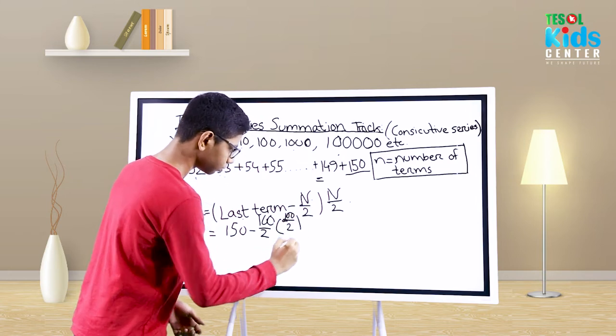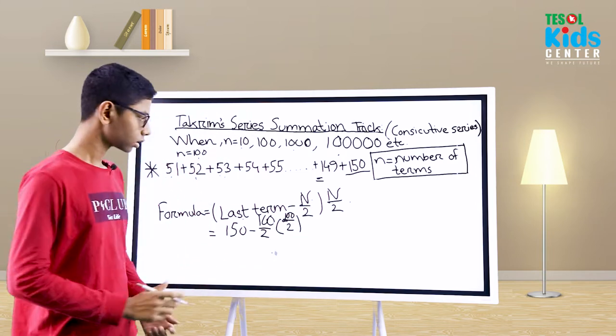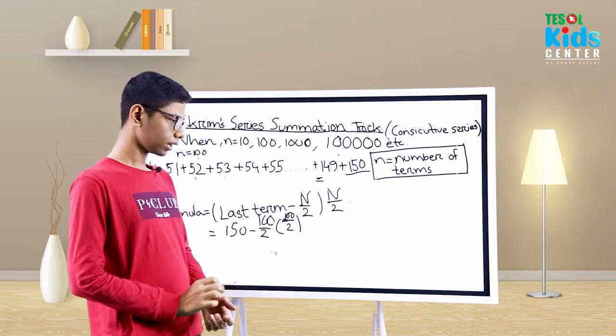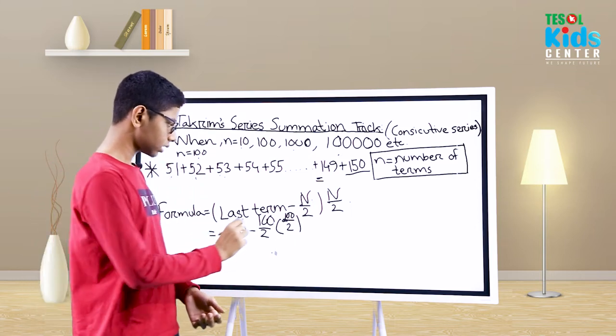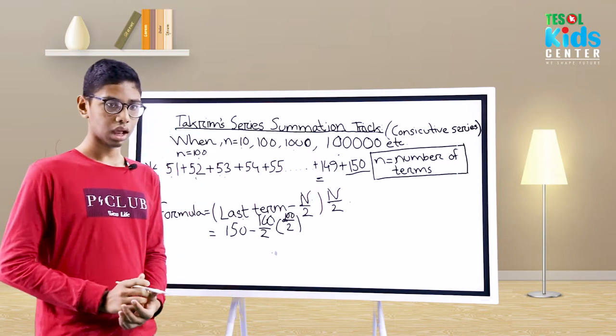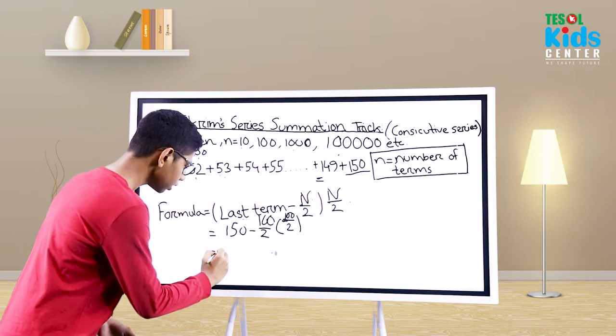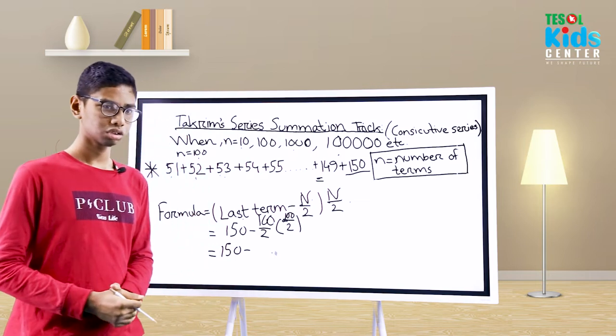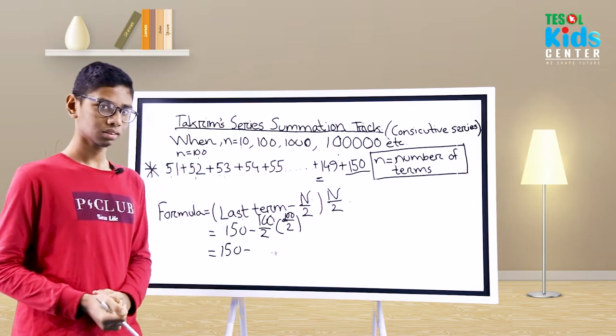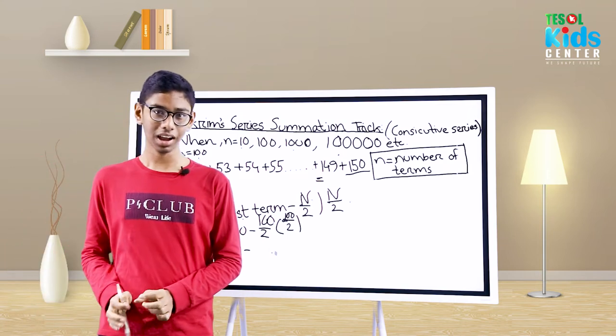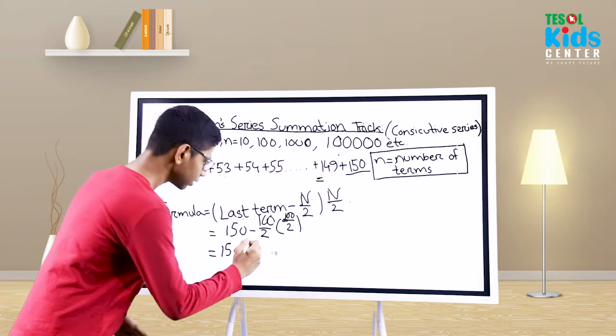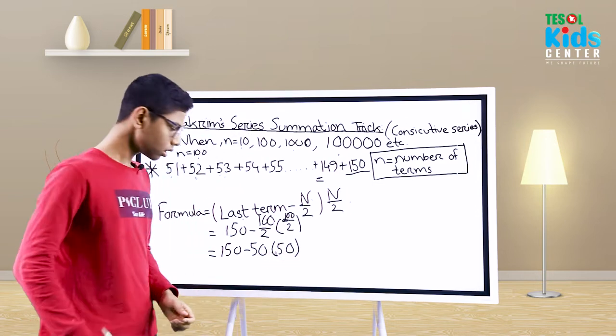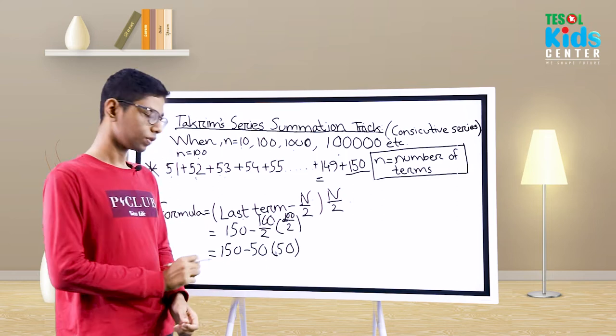So it's according to the rule: 150 minus 100 divided by 2, and in brackets we will write it. Now 150 minus 100 divided by 2, do you know what's the answer? Guess it. Yeah, you guessed it right, it's 50. So 50 and in bracket 50.